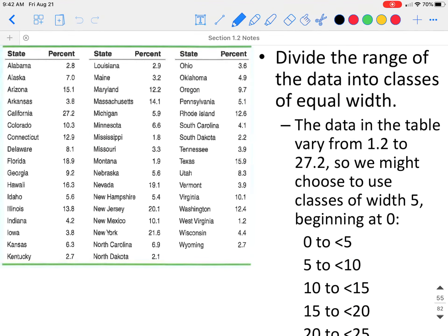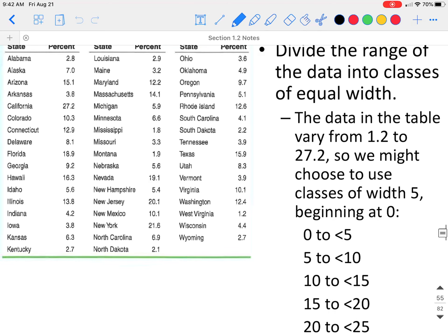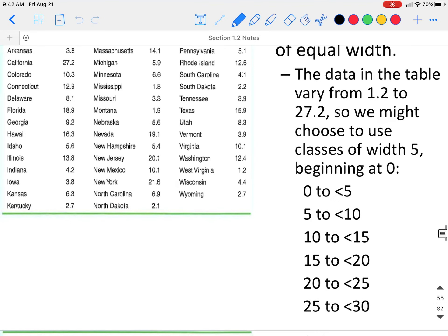The first thing we need to do is divide the range of the data into classes of equal width. We know that the data values are going to go from 1.2% to 27.2%. So let's make our class width of 5. That means from 0 up to 5, then from 5 up to 10, 10 up to 15, 15 to 20, 20 to 25, and then 25 up to 30 would be our different classes.